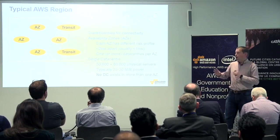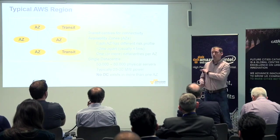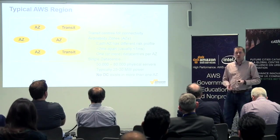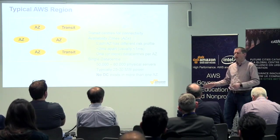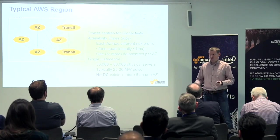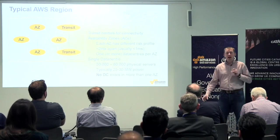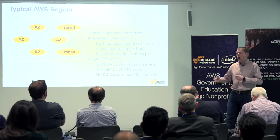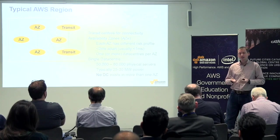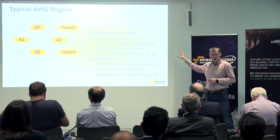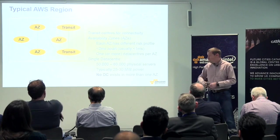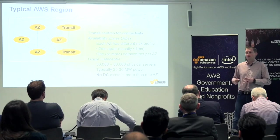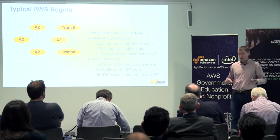Each availability zone has a different risk profile, but they are close enough apart — less than two milliseconds, typically less than one millisecond — that you can deploy services across both availability zones in a synchronous way. This is great for architecting for high availability, because you can have services delivered from two availability zones at the same time, synchronously replicated. It looks and appears as though it's in one data centre, but behind the scenes it's in different physical locations. Within a single data centre we typically have between 50 and 80,000 physical servers.